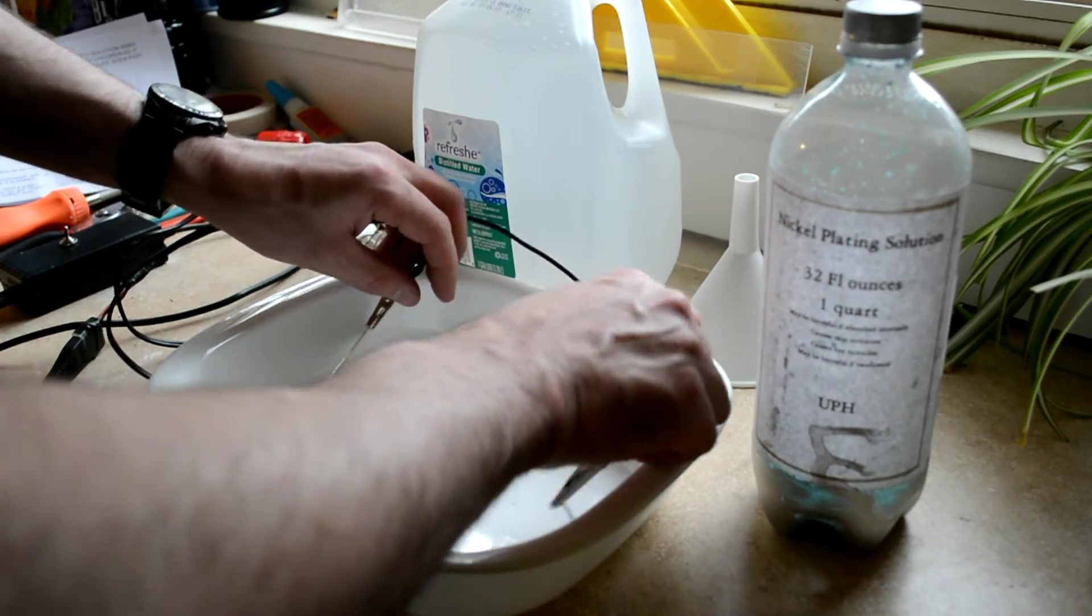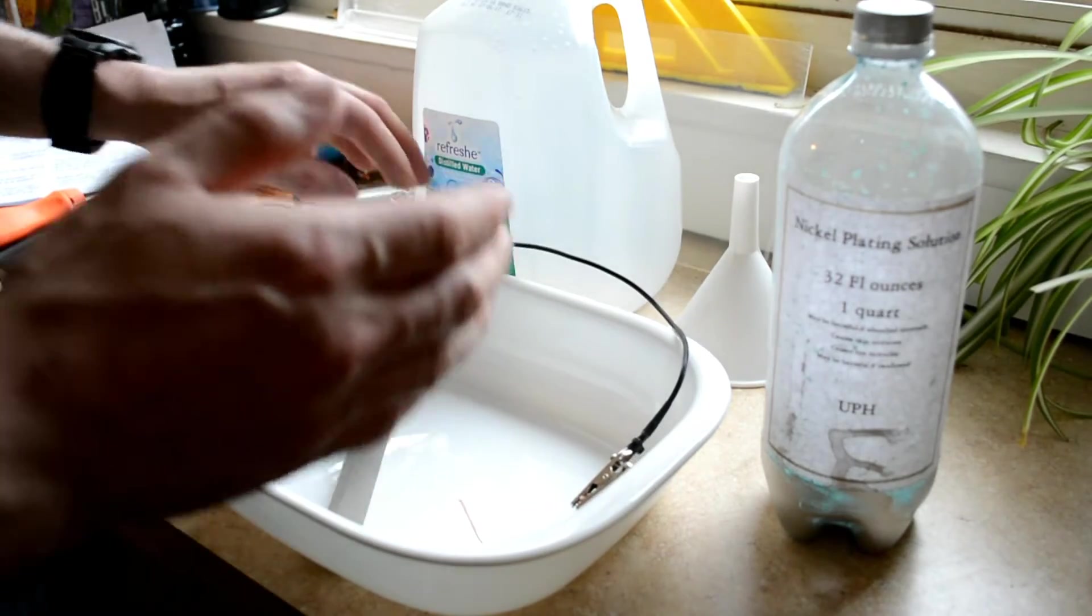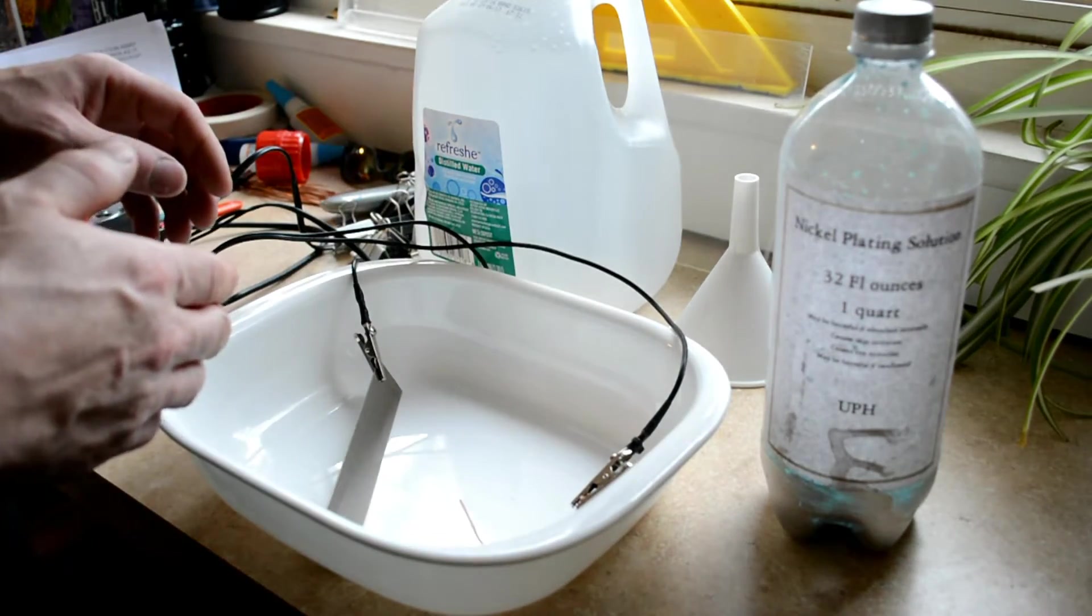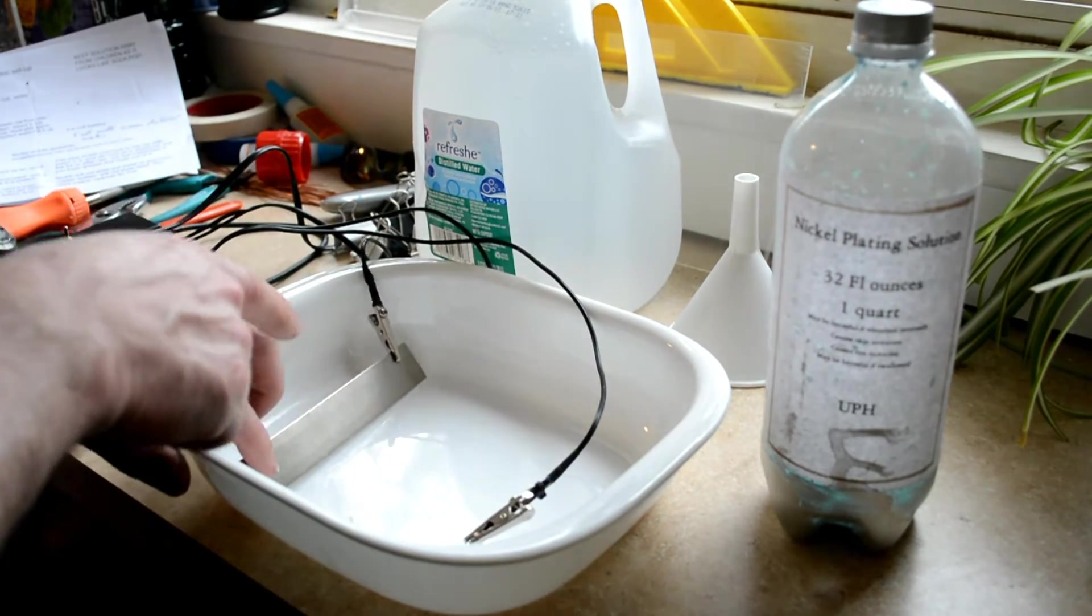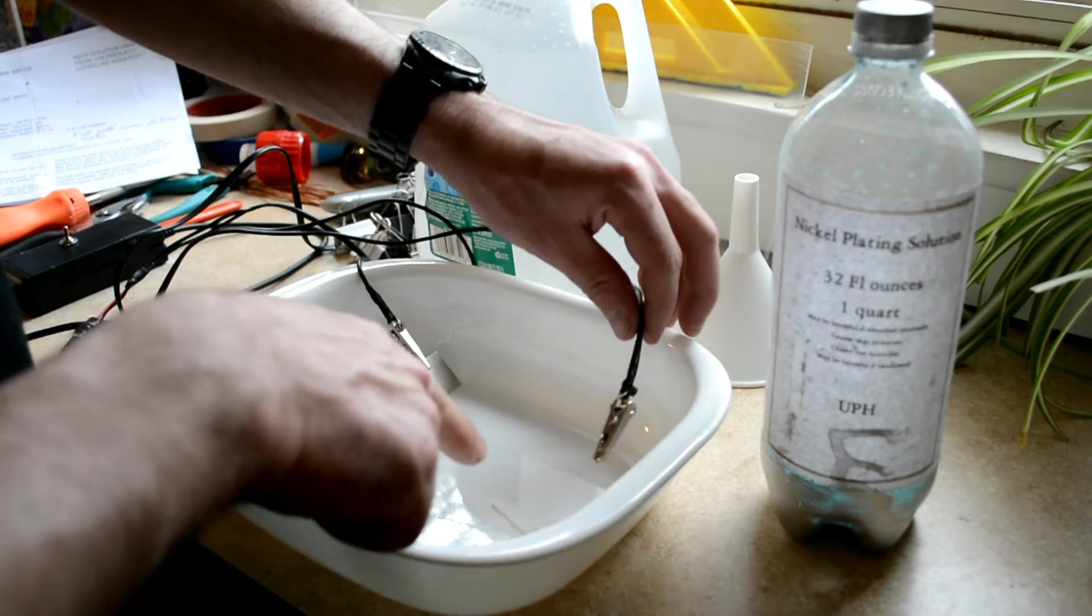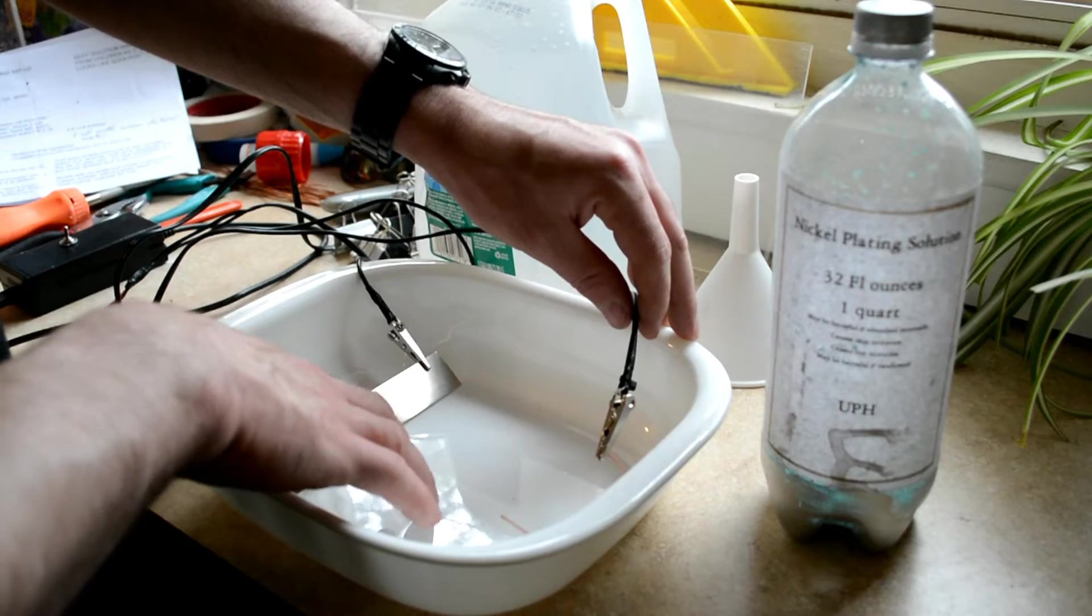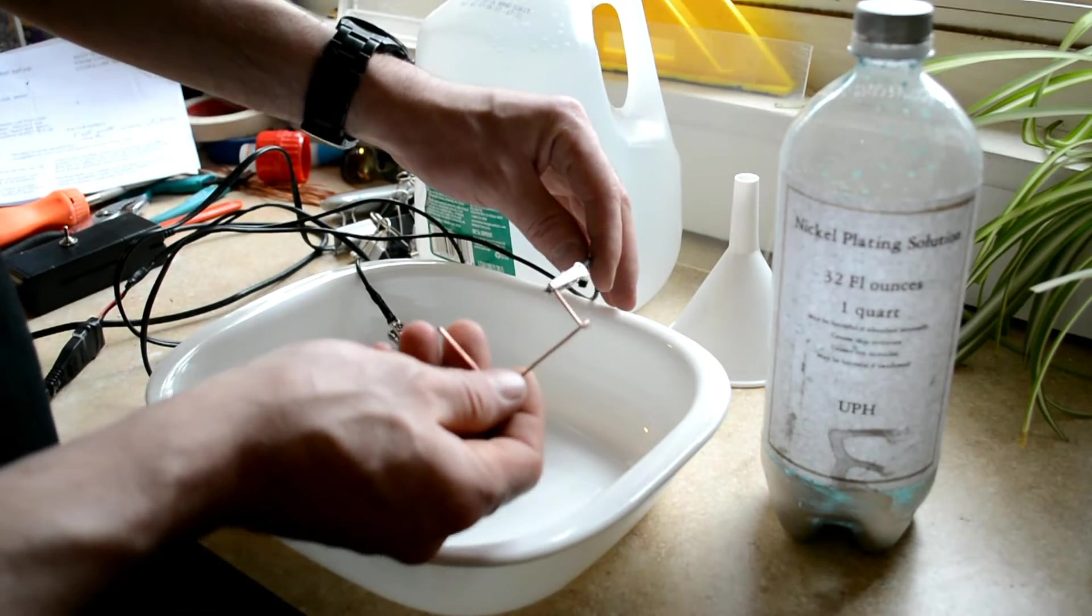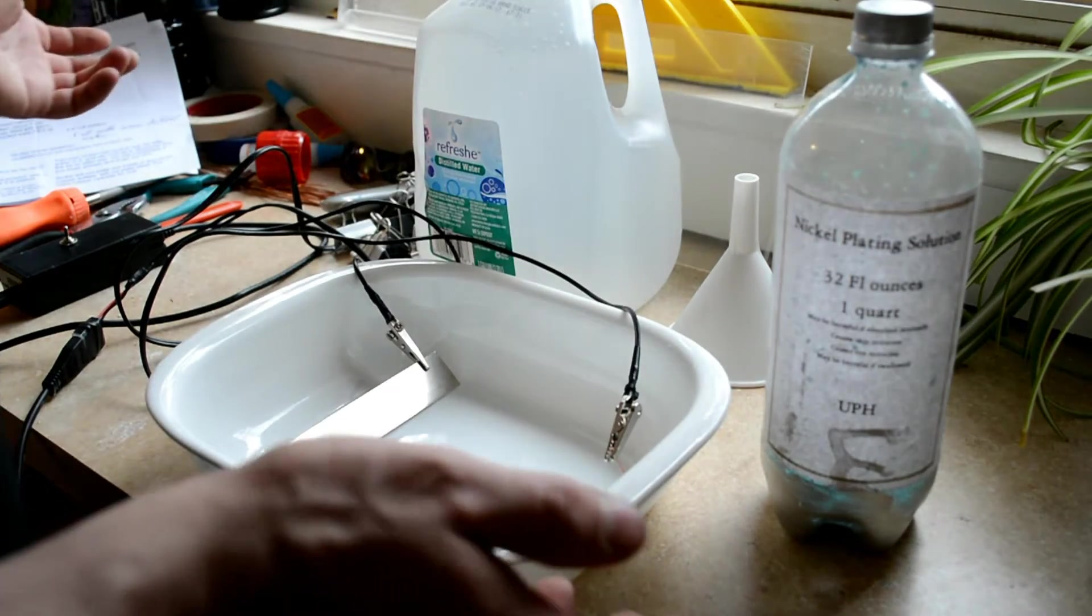The theory is that since electricity flows from positive to negative, you've got the positive on this side and the electricity is going to flow this way through the item that you are nickel plating. So all the nickel in the solution is going to come with it and attach itself to your item to be plated. That's how it actually gets plated.